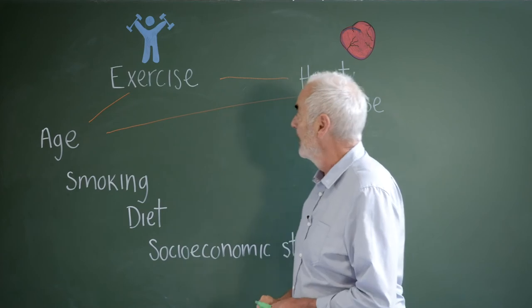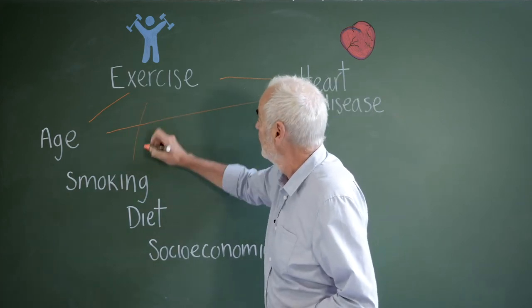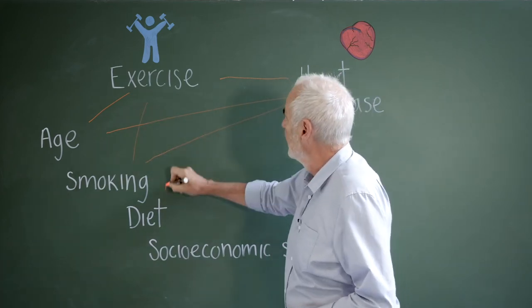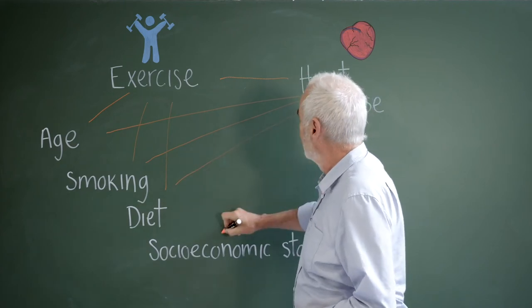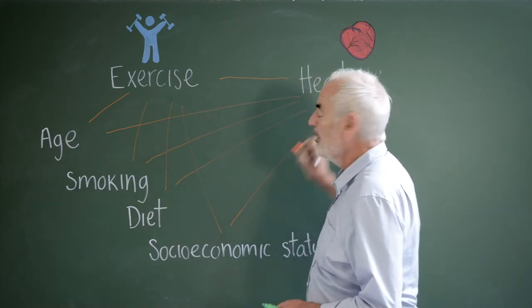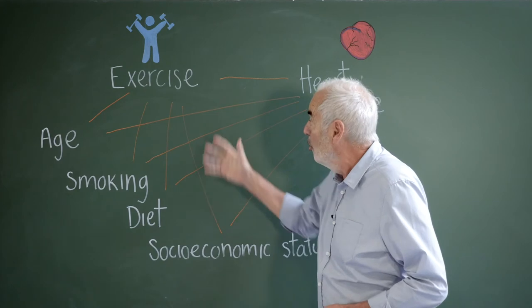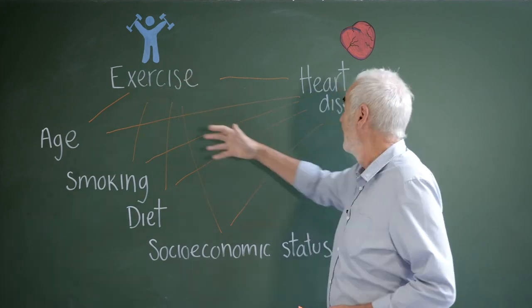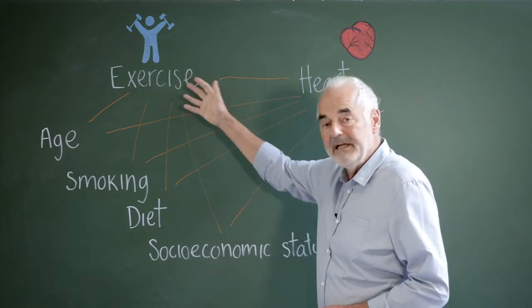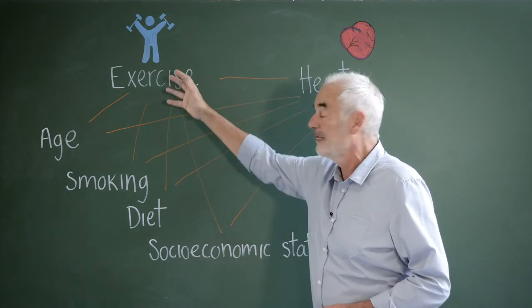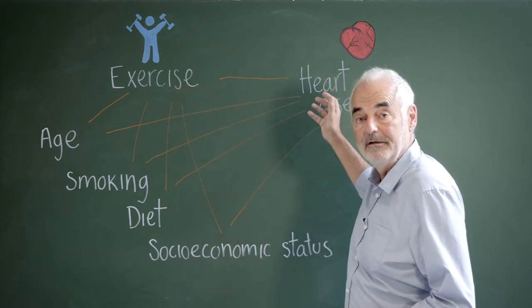Other confounders could be smoking, diet, and socioeconomic status. Now these may not directly cause changes in exercise or heart disease, but they are linked to these factors, both the risk factor and the outcome that we're interested in.